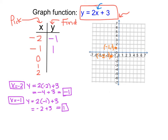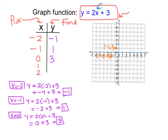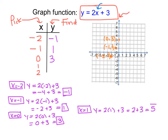Next, we have x is equal to 0. So y equals 2 times 0 plus 3, which is 0 plus 3, equal to 3. So when x is 0, y is 3, and we plot that. Then we have x equals 1. So y equals 2 times 1 plus 3, which is 2 plus 3, which is 5. So when x is 1, y is 5.